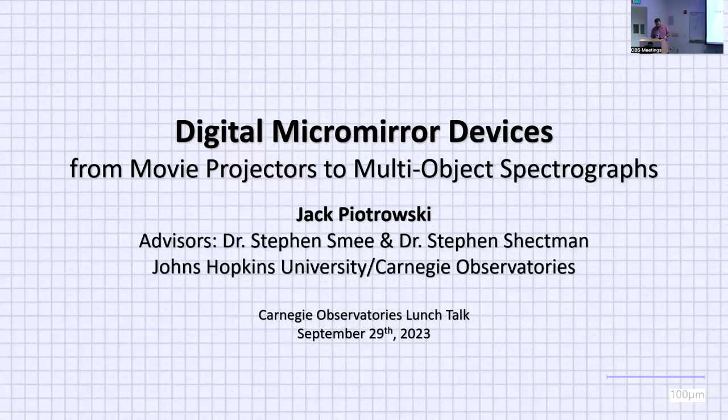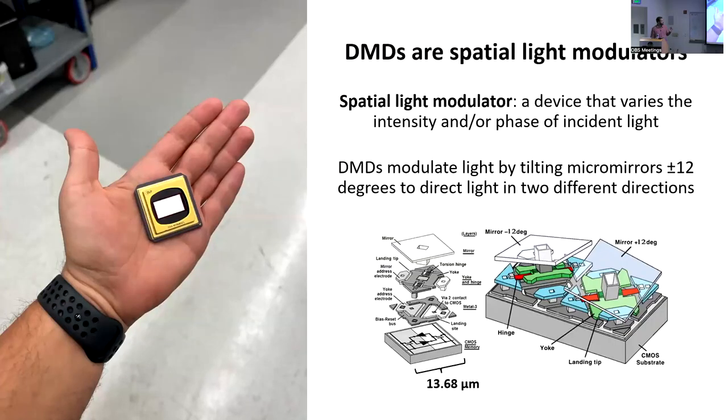This is what a digital micromirror device looks like up close. We have a hundred microns in the corner. They're pretty small and the mirrors tend to be about 10 to 13 and a half microns in diameter. If you step back, this is what the entire device looks like. Across this device right here, there's 2 million little mirrors. So, what do they do?